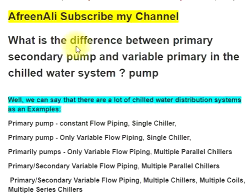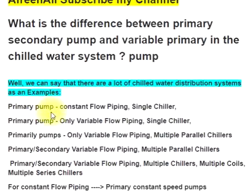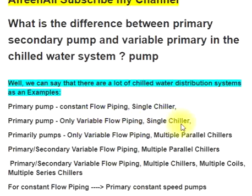There are many chilled water distribution systems. Examples include: primary pump with constant flow piping for a single chiller, and primary pump only with variable flow piping for a single chiller.